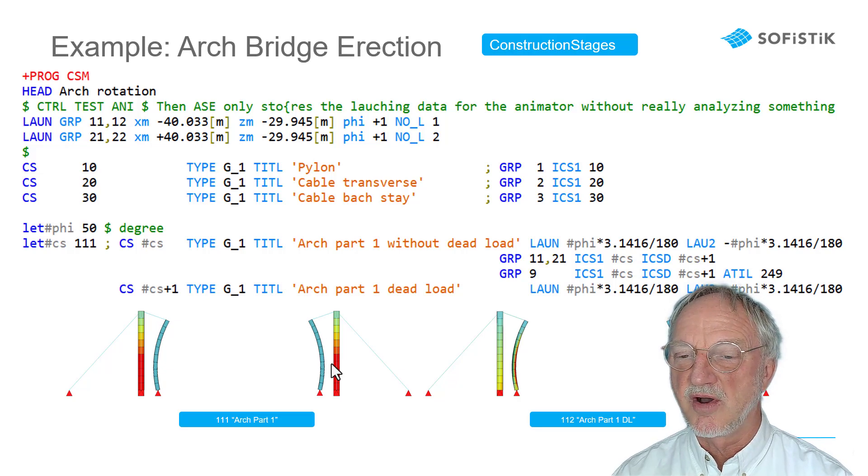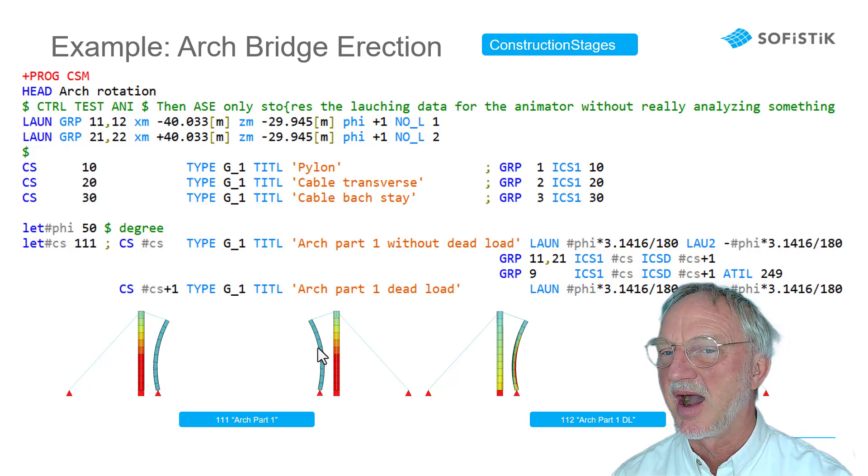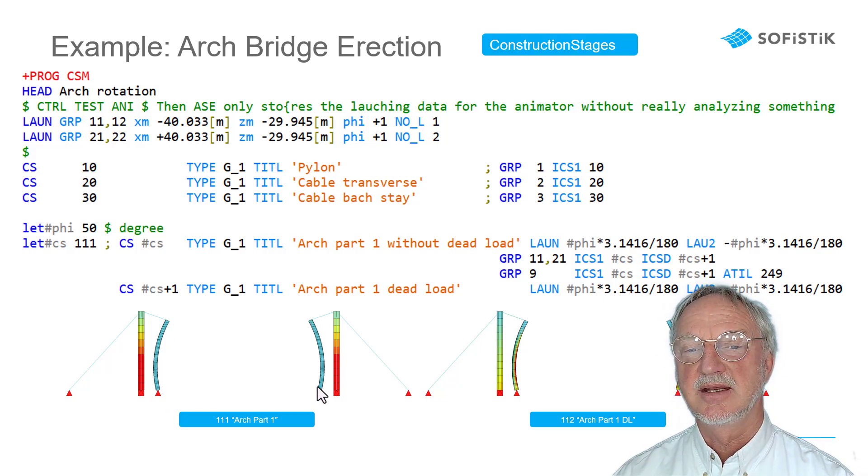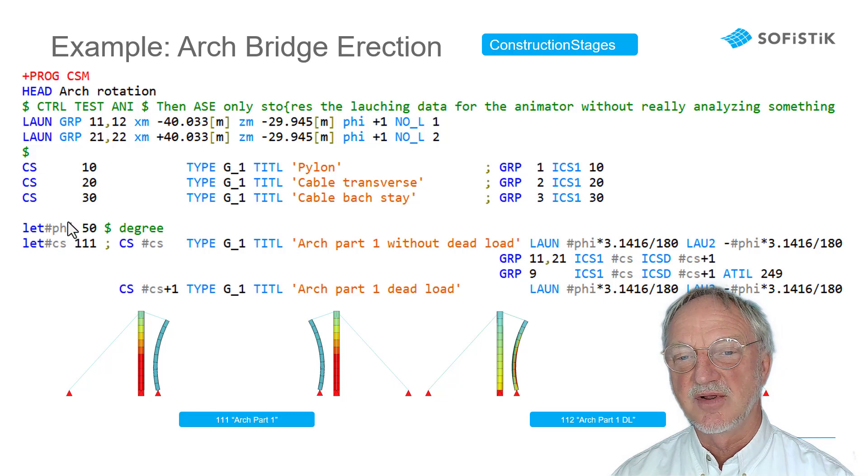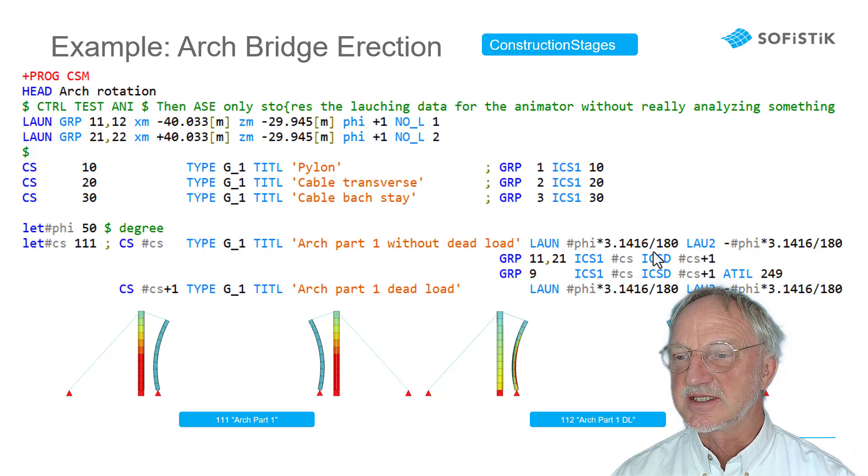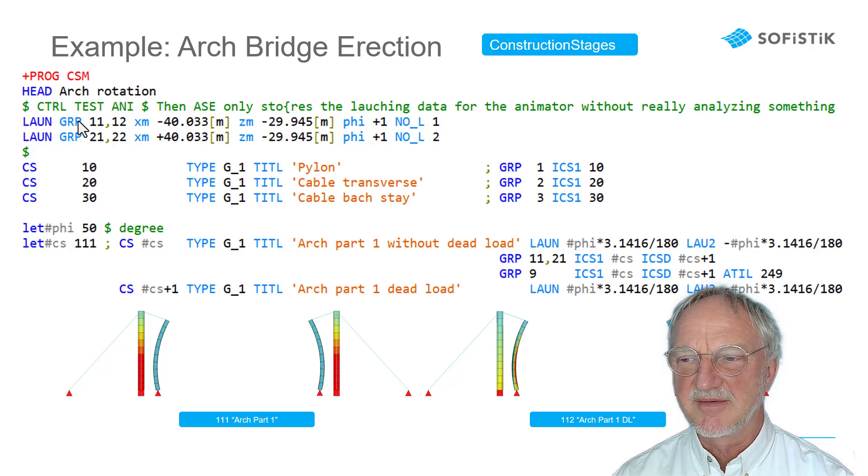First we erect the pylon. Then we come to the first stage where we activate group 11 and 21. And we say we have a launching degree of 50 degrees. And the first launching group, that is here number 1 for group 11, will get a positive rotation.